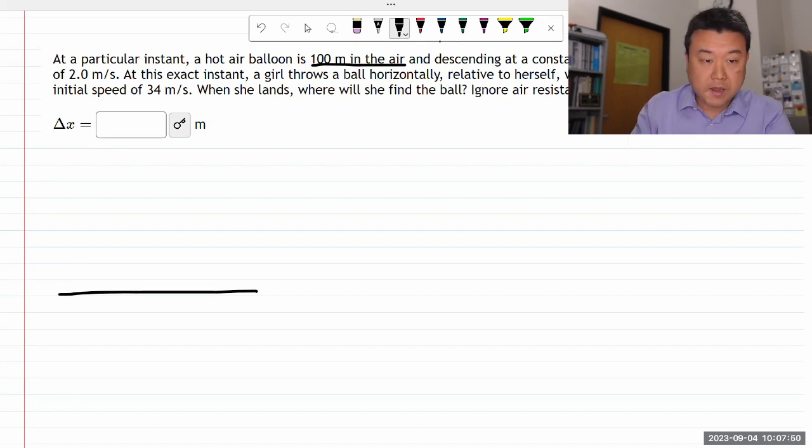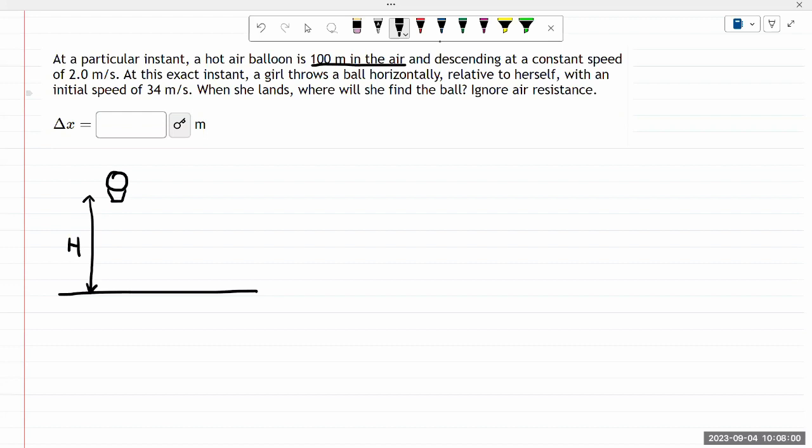So I have some hot air balloon that's at some height and descending at a constant speed. So let me put that speed. So it has some speed of V naught. At this exact instant, a girl throws a ball horizontally. So there's a ball being thrown out horizontally.